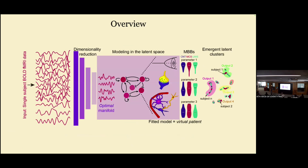Just a quick overview of the talk: we have fMRI data from patients with disorders of consciousness, as Hako explained this morning. The idea is to first perform dimensionality reduction on this data, then work in this reduced dimensional space for modeling, calibrating the model to each individual patient, and from there extract biomarkers or emergent features to understand what's going on with these patients.